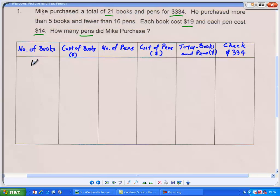Let's start with 10 books. The cost of 10 books would be 10 times $19, because each book costs $19. 10 books would cost 10 times 19, $190.